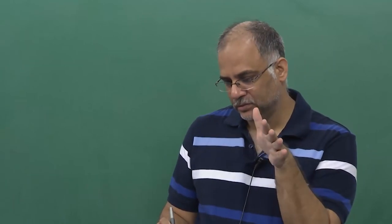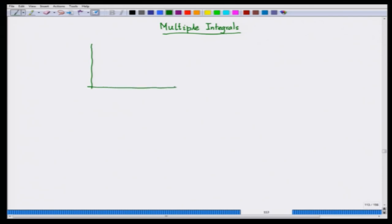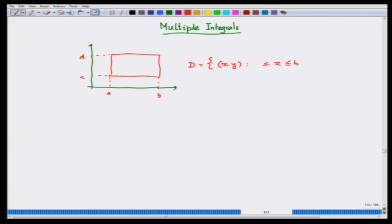We are going to first talk about how to integrate a function f over a rectangular domain. We are in two dimensions and consider a rectangular domain. Here is A, here is B, here is C and here is D. The rectangular domain D consists of all (x, y) where x lies between A and B and y lies between C and D.